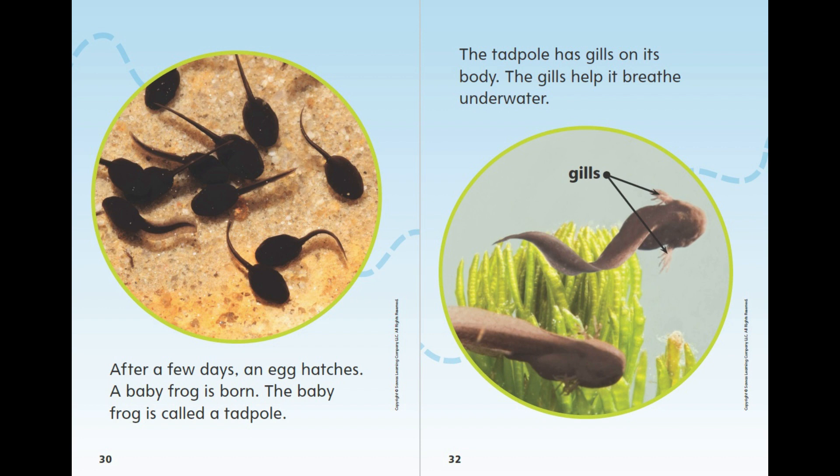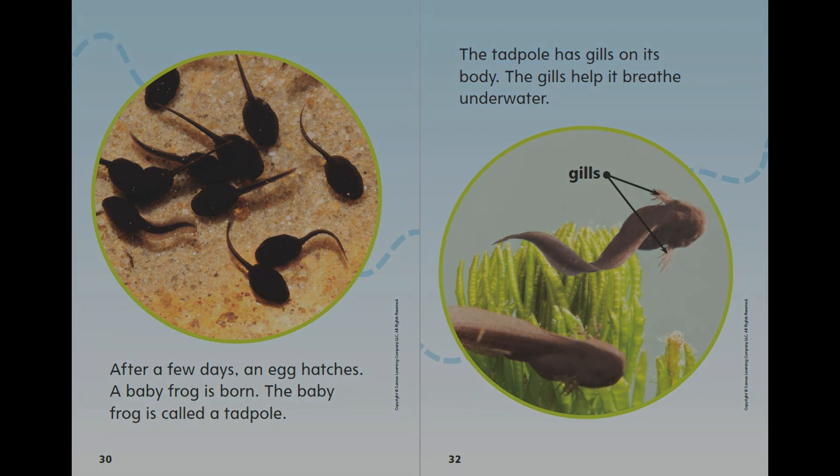After a few days, an egg hatches. A baby frog is born. The baby frog is called a tadpole. The tadpole has gills on its body. The gills help it breathe underwater.